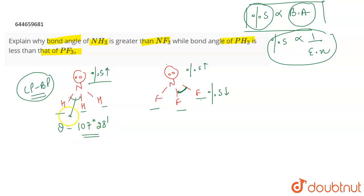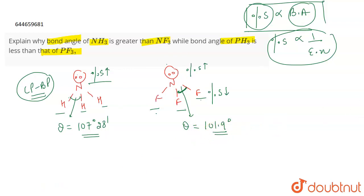In NF3, there is less percentage s-character in the fluorine atoms attached and more s-character in the lone pair. This causes a redistribution of s-character, due to which the bond angle decreases. The bond angle θ for NF3 is approximately 101.9 degrees. This entire change is driven by the redistribution — more s-character in the lone pair, less in the fluorine bonds.